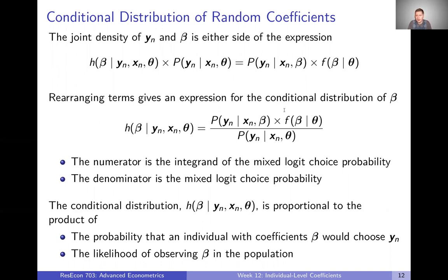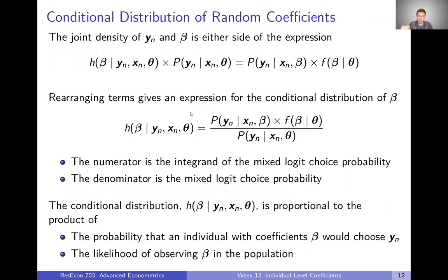There's some nice intuition here. If a particular coefficient has a low likelihood of occurring in the population at all, then even conditional on choice, it's still going to have a relatively low likelihood of occurring within this particular group. And similarly, if a coefficient occurs often in the population but would be unlikely to generate the kinds of choices we're thinking about, that also gets down-weighted in this calculation — and the opposite for things that are either very likely to occur in the population or very likely to generate the kinds of choices in question. So that's our formal definition of a conditional distribution of random coefficients.